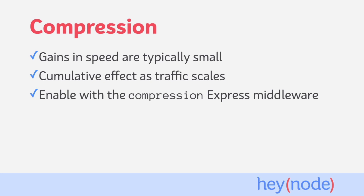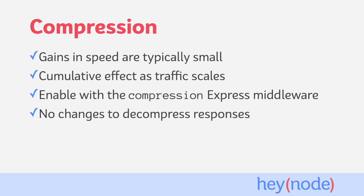Adding compression to an Express application is straightforward. You can add the compression middleware with a single line of code and enable gzip compression for every response your server sends. After enabling compression, there should be no need to do anything special to decompress responses. Almost all clients, like browsers and HTTP request libraries, handle decompressing gzip responses by default.